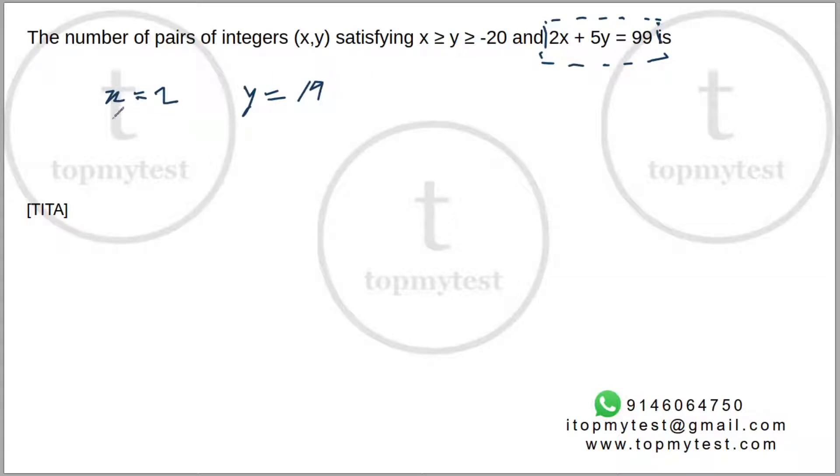Now, given this, we know when x increases by the coefficient of y, y will decrease by the coefficient of x. My first criteria should be x has to be greater than or equal to y. So I need to increase the value of x. If I put x equals 7, y should become 19 minus 2, so 17. You can verify 7 into 2 is 14, 17 into 5 is 85, 85 plus 14 is 99.